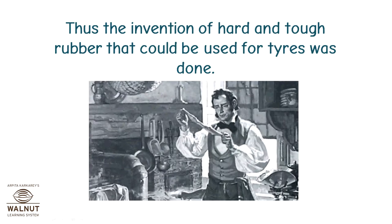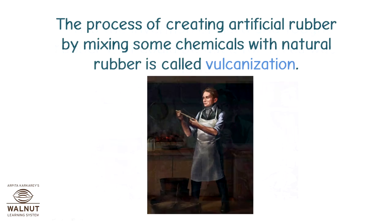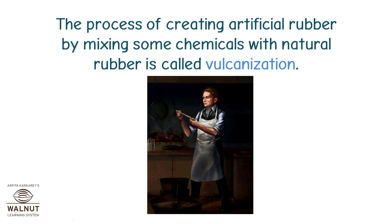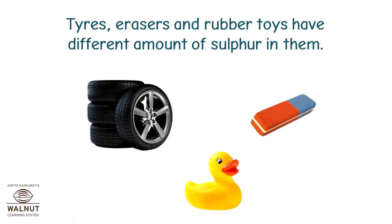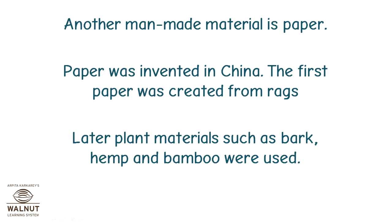Thus, the invention of hard and tough rubber that could be used for tires was achieved. The process of creating artificial rubber by mixing some chemicals with natural rubber is called vulcanization. The amount of sulfur depends on the purpose for which the rubber is used — tires, erasers, and rubber toys have different amounts of sulfur in them. Another man-made material is paper, which was invented in China.